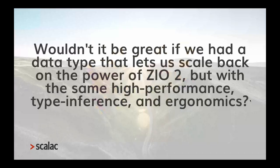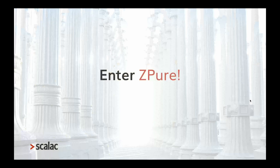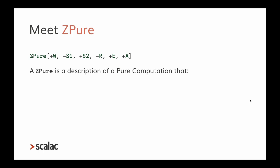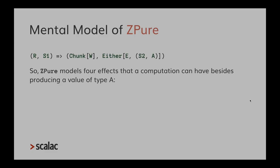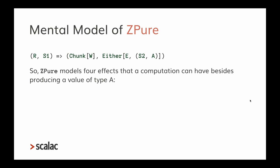Wouldn't it be great if we had a data type that gave us the power of ZIO 2 with the same high performance, type inference, and ergonomics? The answer is yes — and that is ZPure from ZIO Prelude. ZPure is a description of a pure computation, not including I/O, that requires an environment R, an initial state S1, can fail with error E or succeed with updated state S2 and value A, along with some log W.